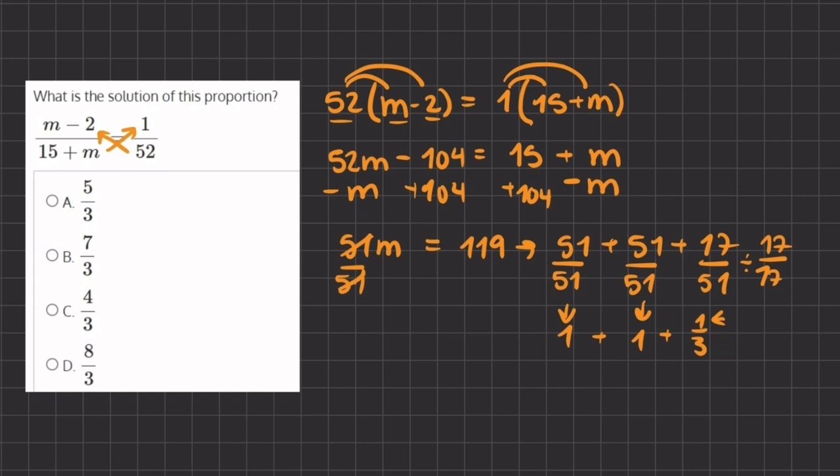So now we have m equals 1 plus 1 plus 1 third, which gives us 2 and 1 third. Now our answers are all written as improper fractions.